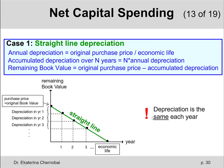The same amount is lost every year — that is the key. The depreciation is the same every year. If you imagine the purchase price as your original book value, you can picture going downstairs with steps of the same height: each step represents the same depreciation amount, the same value lost every year.